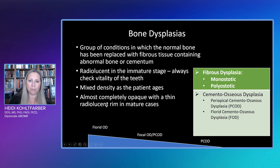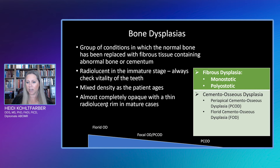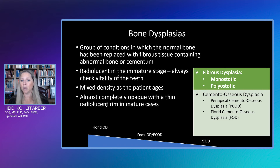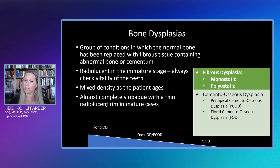A more mature fibroosseous entity will look largely opaque with only a thin radiolucent rim. The radiolucent rim is the fibrous capsule, and that's why it's one of the things we look at when evaluating whether we have a fibroosseous lesion. There are a number of these: sometimes we see fibrous dysplasia, which can be in one bone (monostotic) or multiple bones (polyostatic). Or we can have cementoosseous dysplasia, such as periapical cementoosseous dysplasia or florid cementoosseous dysplasia. Sometimes we'll see them as periapical osseous dysplasia or florid osseous dysplasia — don't let that confuse you.